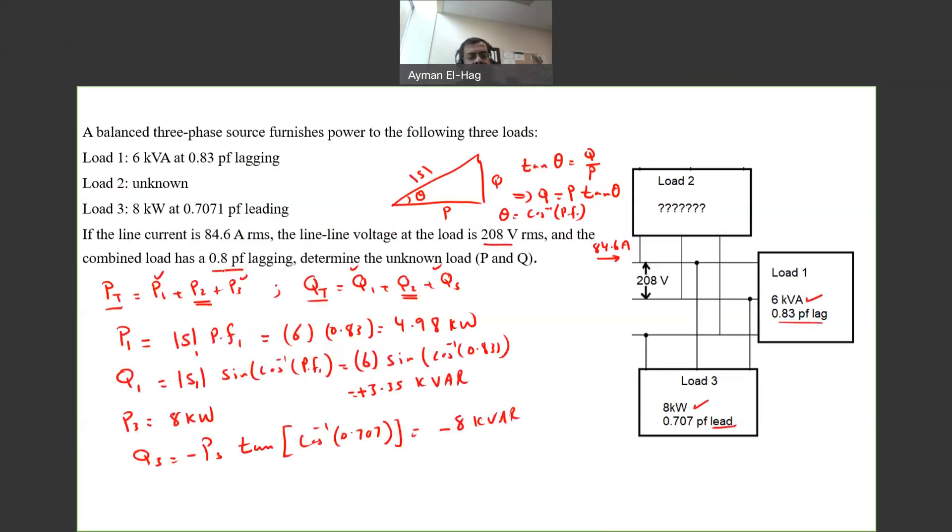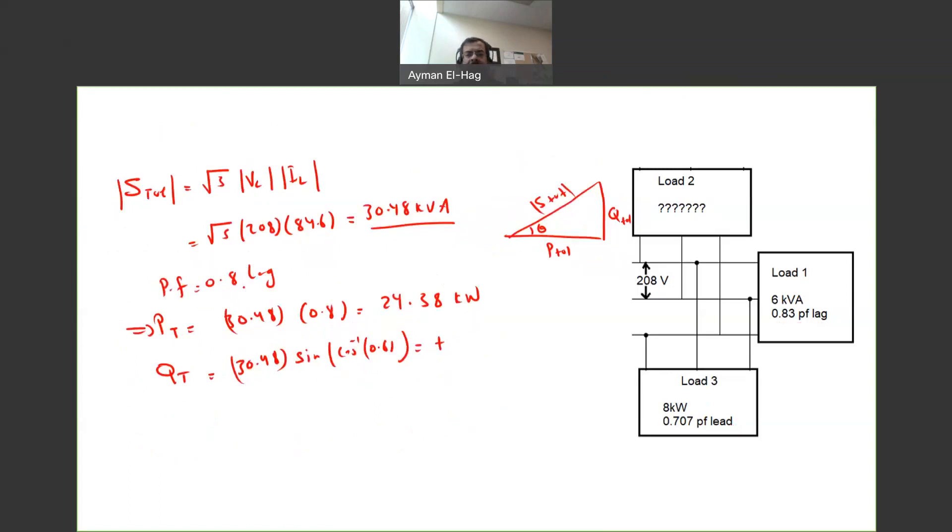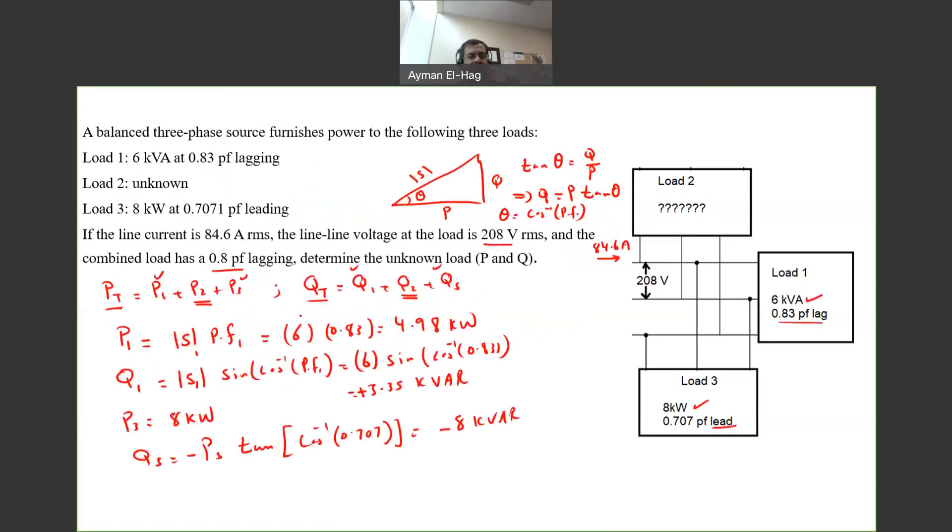Now the Q total, as we did before, you multiply S times sine cosine inverse. So this will also be 30.48 times sine of cosine inverse of 0.8. This will give me plus because the power factor is lagging. This gives me 18.29 kVAR.